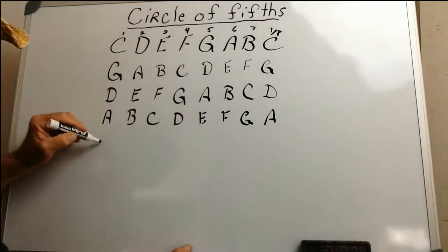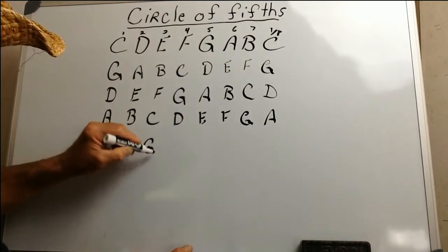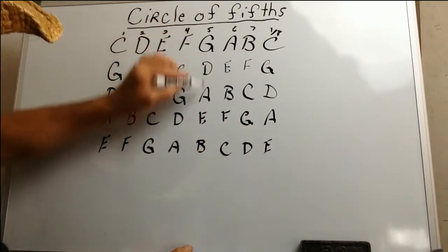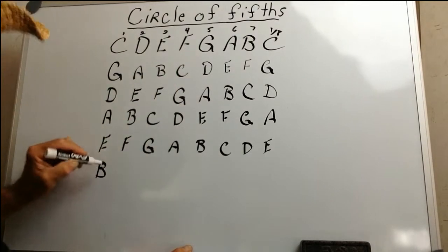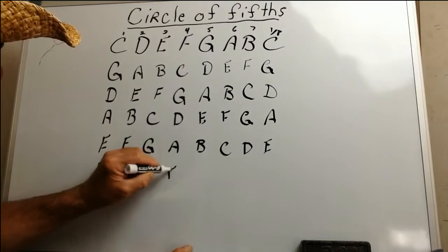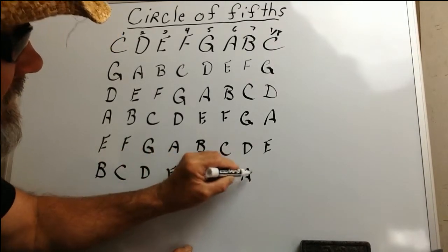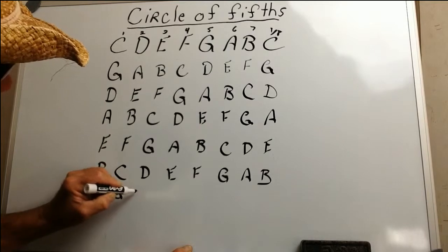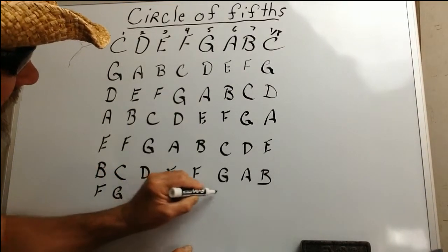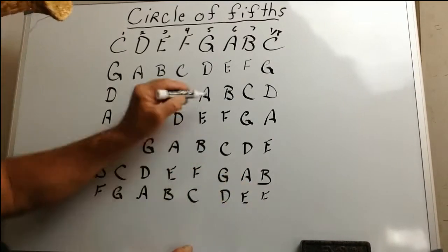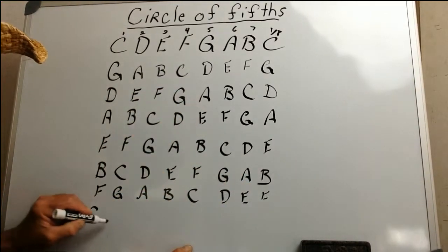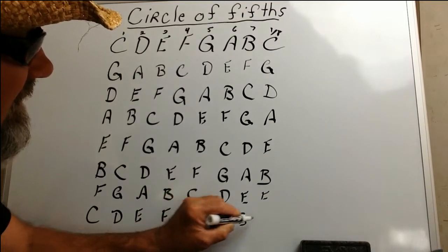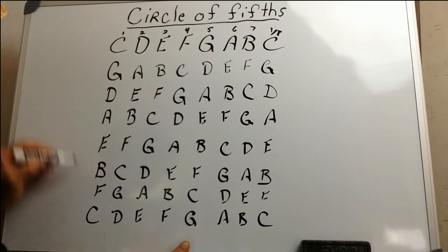We take the fifth and bring it down — that's E: E, F, G, A, B, C, D, E. And the fifth is B: C, D, E, F, G, A, B, C. Then the fifth is F: F, G, A, B, C, D, E, F. Next one is C: C, D, E, F, G, A, B, C. We stop at C because we've gone through it all.